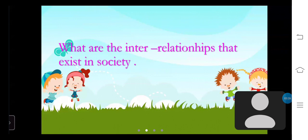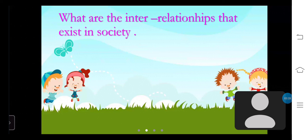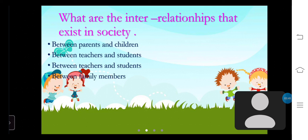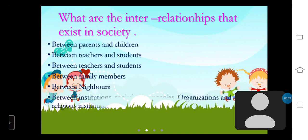What are the interrelationships that exist in society? Let's see what they are. They are between parents and children, between teachers and students, between family members, between neighbors, and between institutions, societies, companies, organizations and religious institutions.